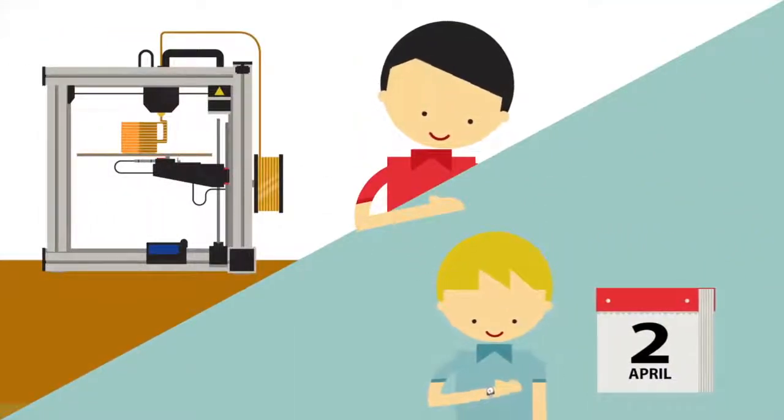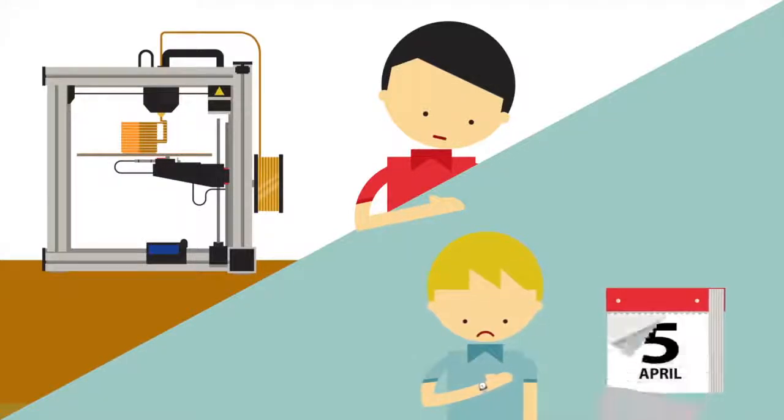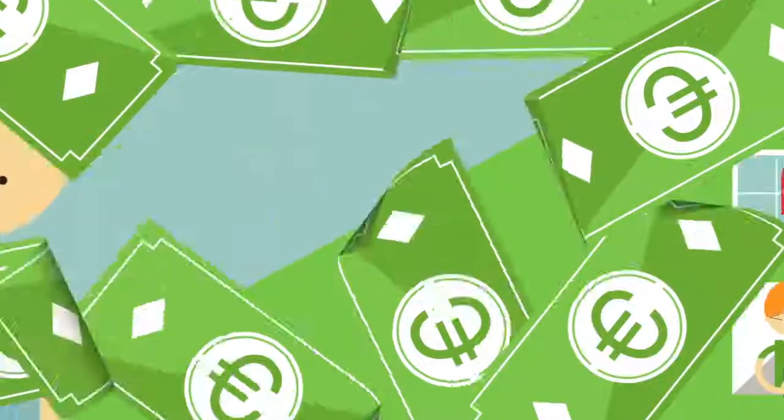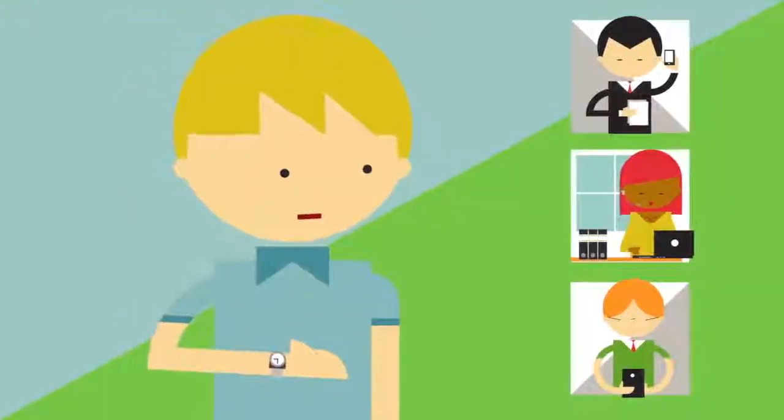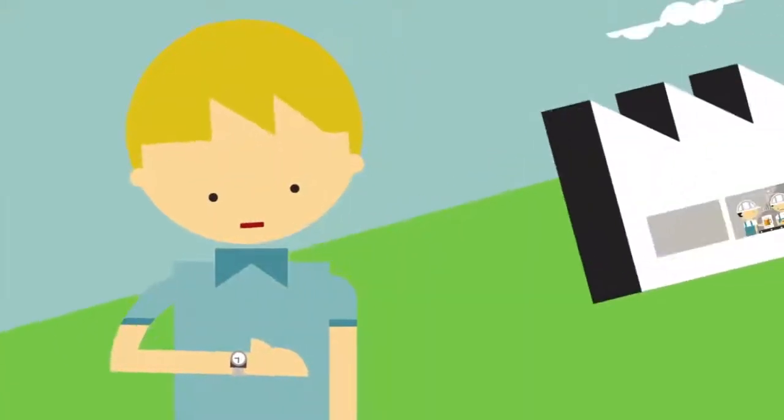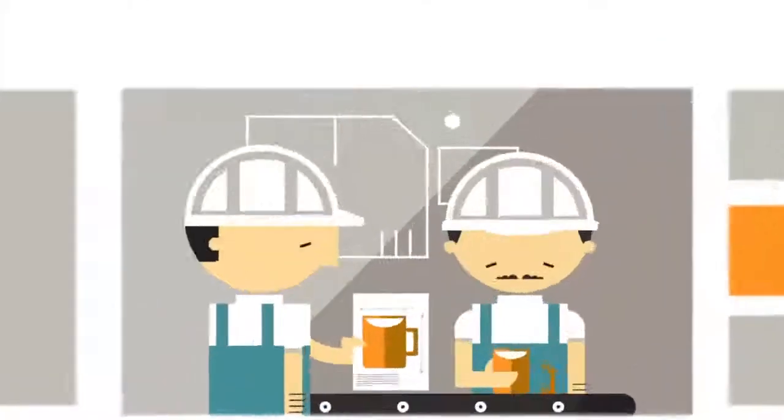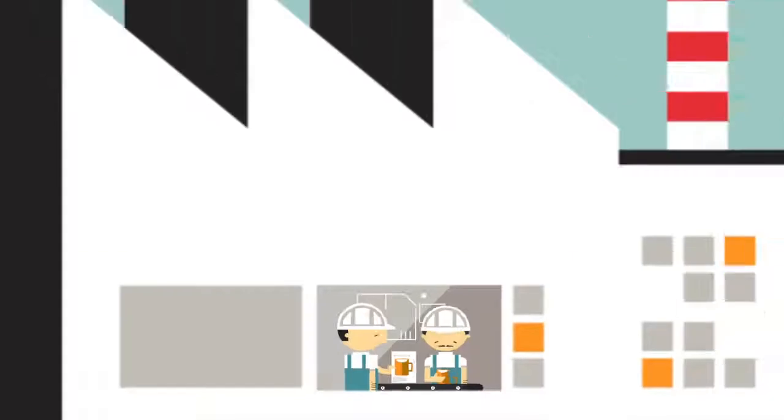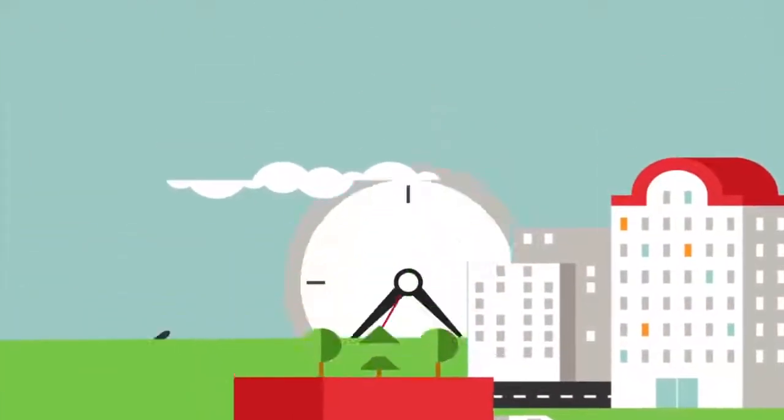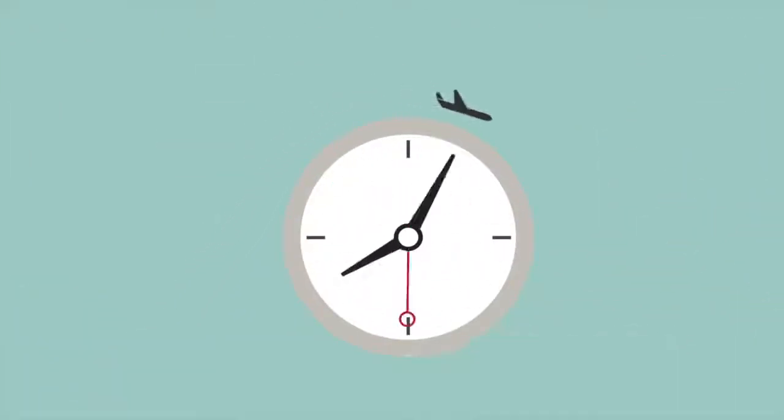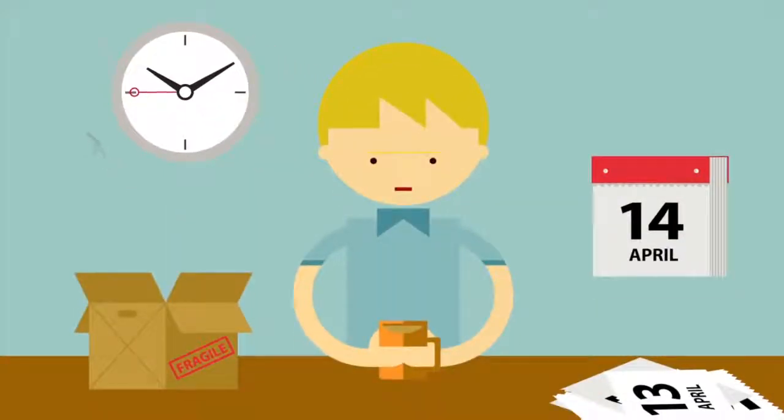Most companies still order 3D objects the traditional way. However, this process takes a long time and costs a lot of money. From choosing the best manufacturer to the ordering process, then there's the waiting for production until distribution. After waiting for weeks, your ordered object is delivered and can finally be used.